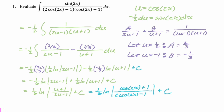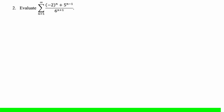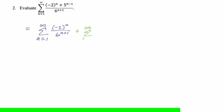Let's take a look at the next part. We want to evaluate the sum from 1 to infinity — always watch that lower bound index; this starts at 1, not 0. The series is (negative 2 to the n plus 5 to the n minus 1) over 6 to the n plus 1. I'm going to break this up. If both geometric series have sums, the overall sum is their total. If either diverges, I can't break it up.